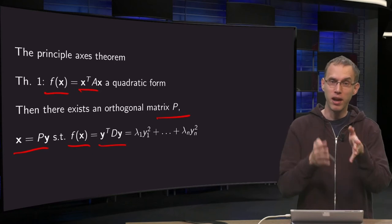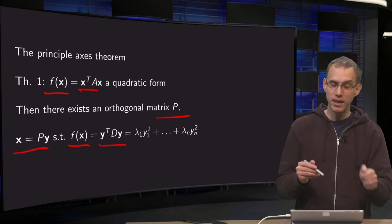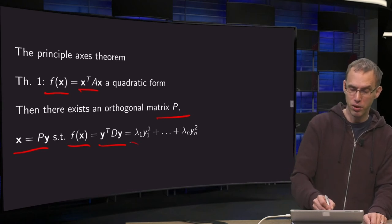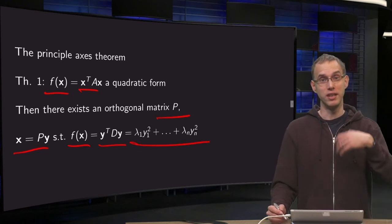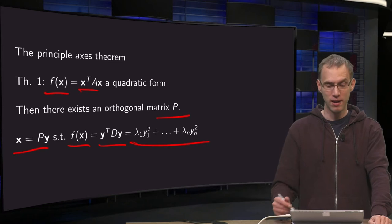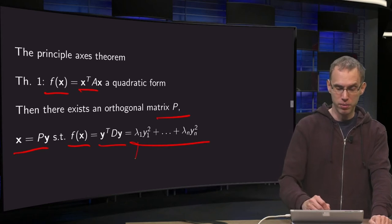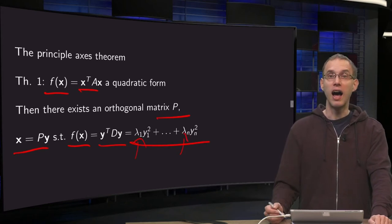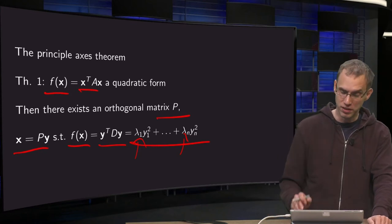So instead of A we get a D in between, and then our quadratic form becomes really nice. We only have quadratic terms in the new variable y, and lambda 1 up to lambda n will be the eigenvalues of A and of D.